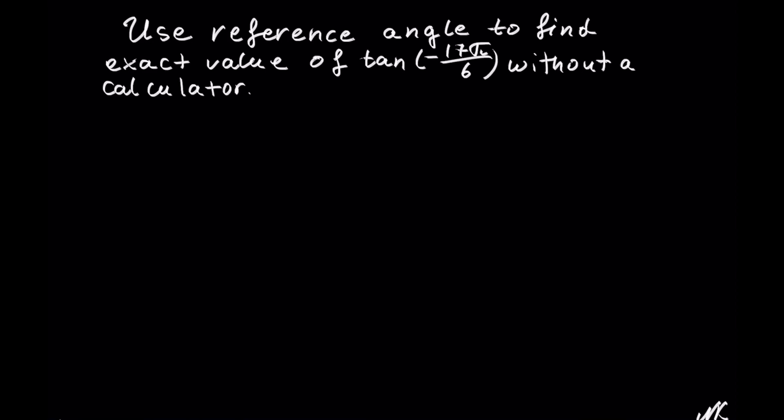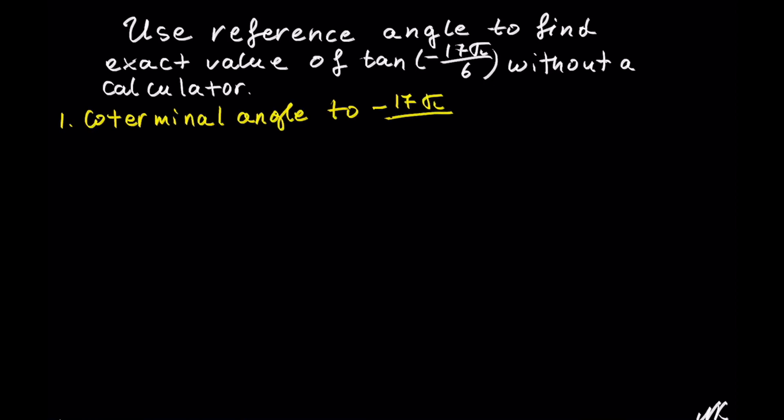We should be able to see that 6 goes into 17 more than 2 whole times, because 6 times 2 is 12. So before we begin looking for the exact value, let's find a coterminal angle to negative 17 pi out of 6.